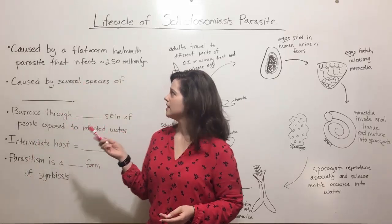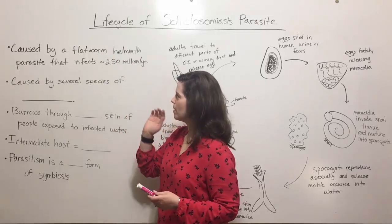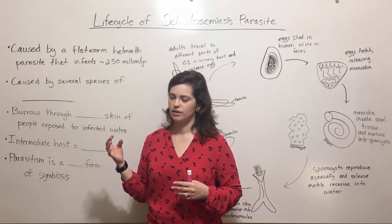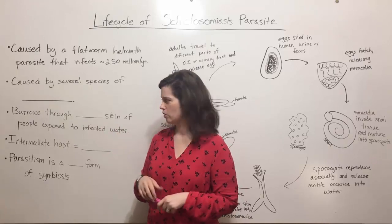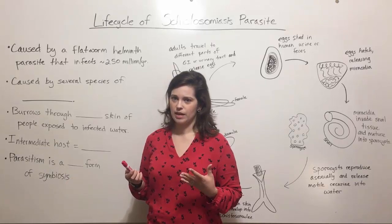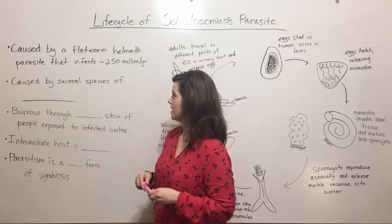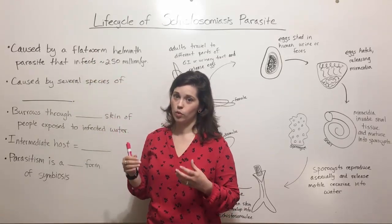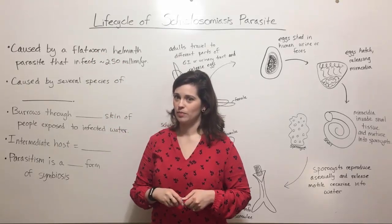Schistosomiasis is a disease caused by a flatworm helminth parasite. Parasitism is a form of symbiosis, where two organisms live in very close contact. It's specifically a flatworm helminth, and it infects between 200 and 300 million people annually.